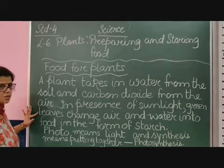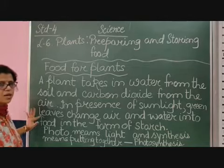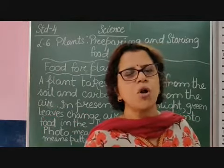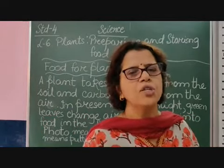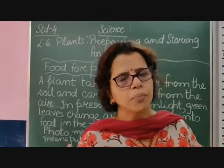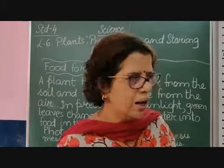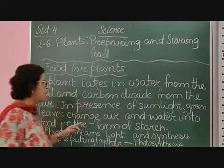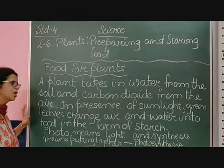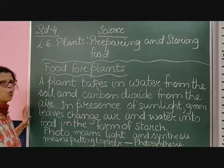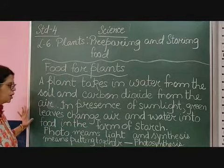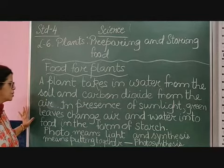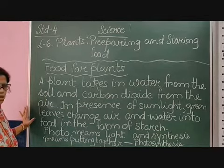Sunlight, along with green leaves — as I told you, green leaves have chlorophyll. Chlorophyll is a substance that makes leaves green in colour. This chlorophyll, along with the green colour, will change air and water into food, and that food is the sugar type which is in the form of starch.